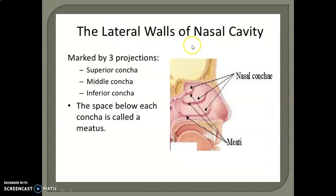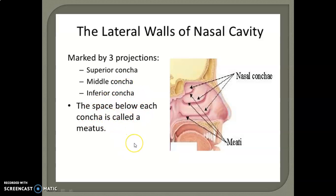Next is the lateral wall of the nasal cavity, which is marked by three projections: the superior concha, middle concha, and inferior concha. The space between each concha is called a meatus.